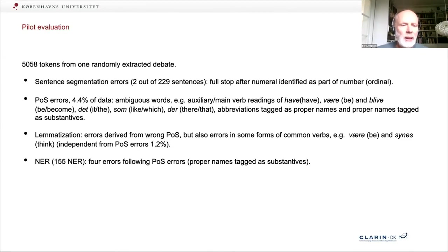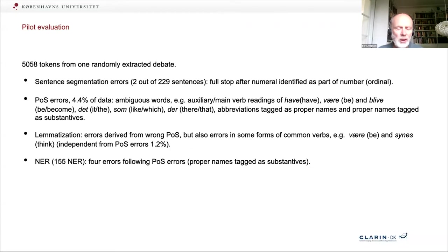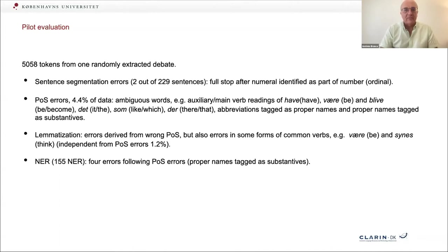This is the last slide. We had very few errors: for segmentation there were only about one percent errors. There were quite a lot of part-of-speech tag errors from the UDPipe software, and as a consequence, also lemma errors. But otherwise it was not too bad, and there were only four named entity recognition errors. Thank you. Let's move to the third and last presentation in this group.